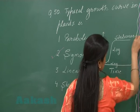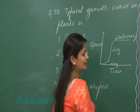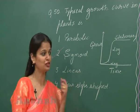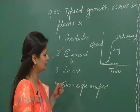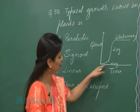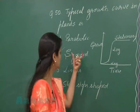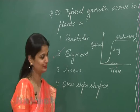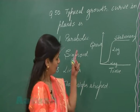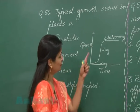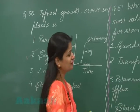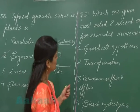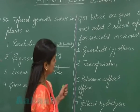Ultimately the growth becomes stabilized. This last phase where growth is stabilized is known as the stationary phase. The growth curve obtained here is known as the sigmoid curve. Moving on to question number 51.